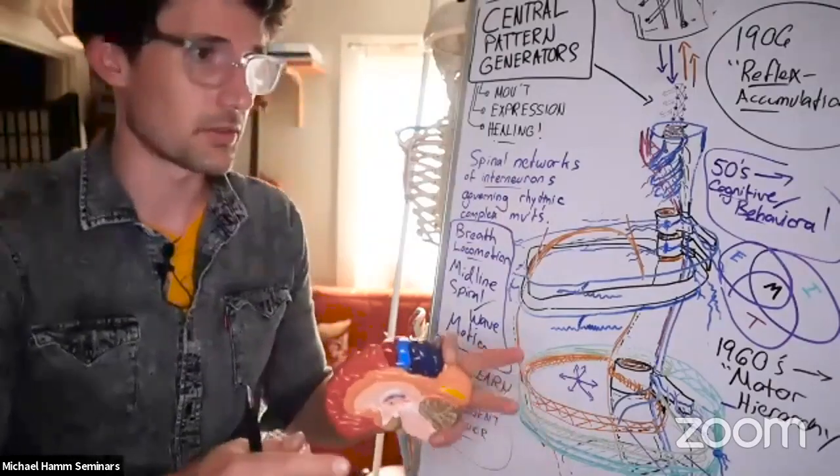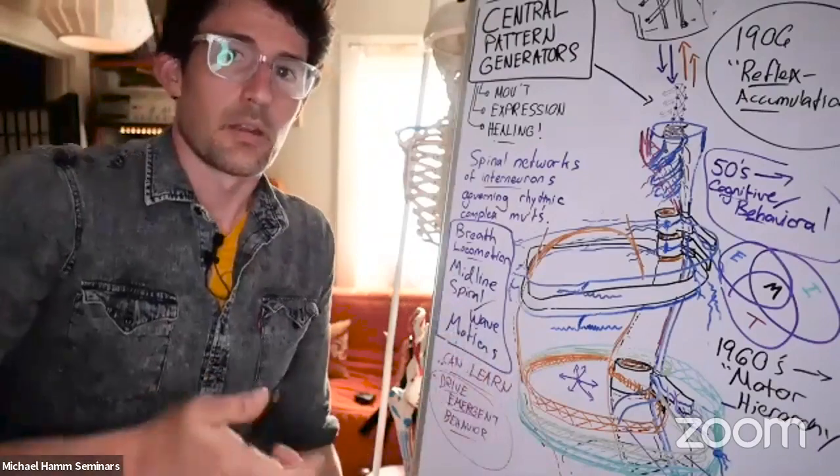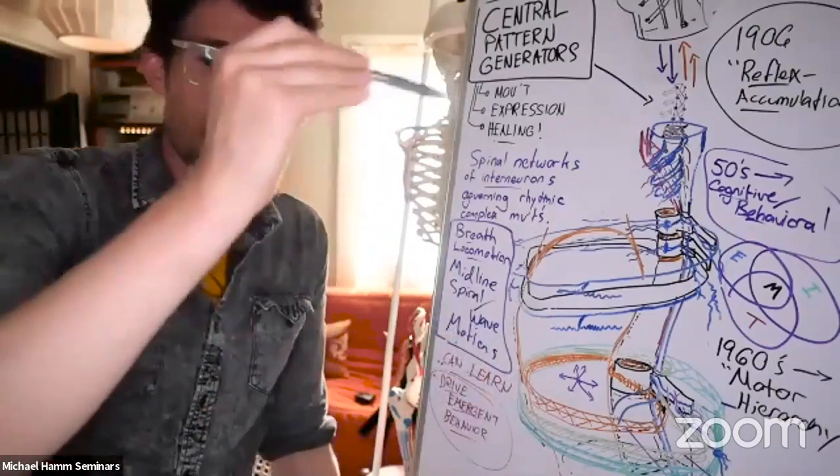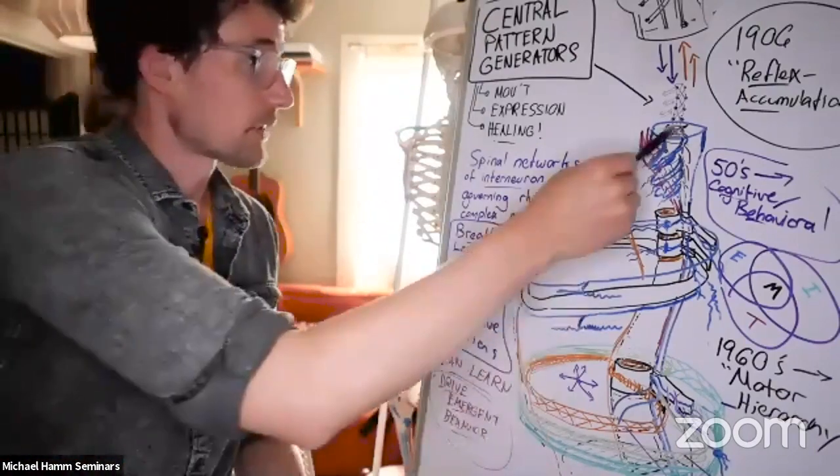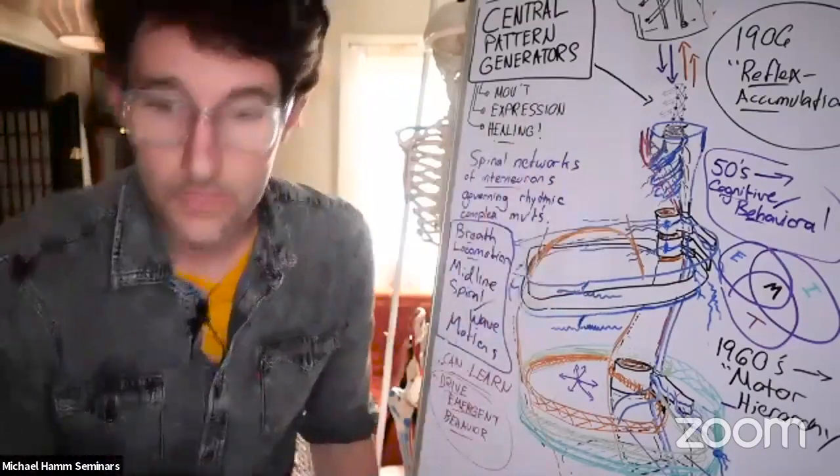So brainstem behavior is coordinative at a very high level. It's the brainstem's conversation with the spinal cord that we are interested in here. We're going to talk about central pattern generators today.